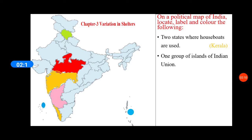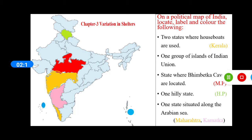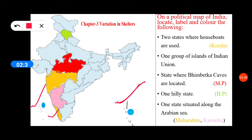Chapter Number 3 - Variation in Shelters. पहला: Two states where houseboats are used — आप कोई भी दो states लिख सकते हो। मैंने यहाँ Kerala लिखा है, Kerala का color orange है। One group of islands of Indian Union — आप Andaman & Nicobar को या Lakshadweep island को कर सकते हो। State where Bhimbetka Caves are located — Madhya Pradesh, Red color से। One hilly state — आप Himachal Pradesh लिख सकते हो। One state situated along the Arabian Sea — Kerala, Karnataka, Maharashtra, Gujarat — मैंने यहाँ Maharashtra and Karnataka mention किया है।